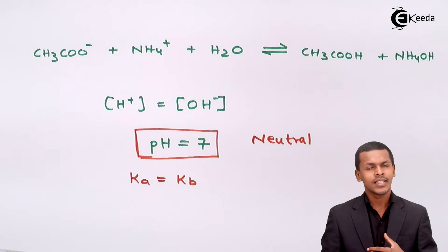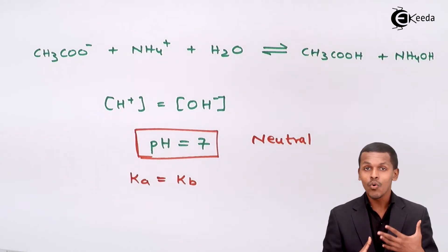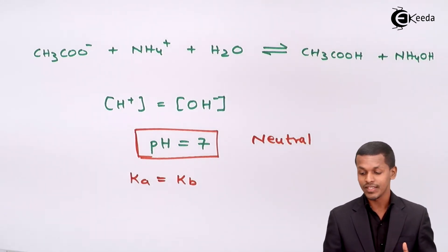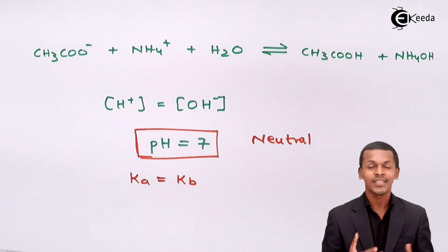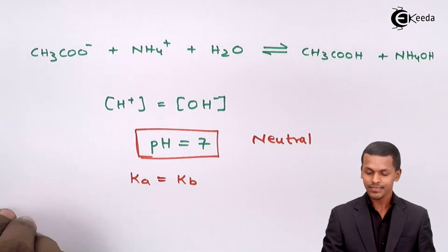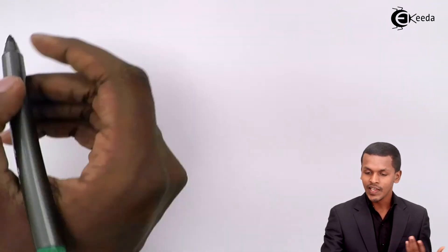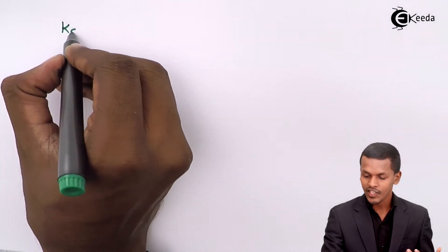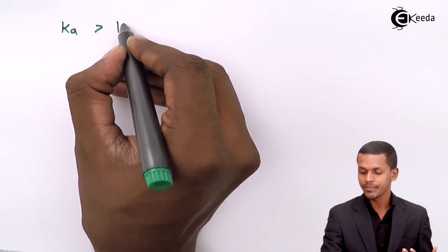But a weak acid can have a higher dissociation constant compared to a weak base. That was the first case when Ka equals Kb. Now let us consider a situation where Ka is greater than Kb.